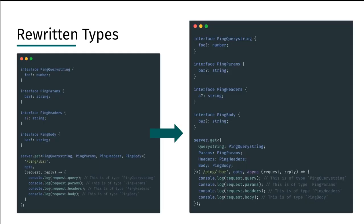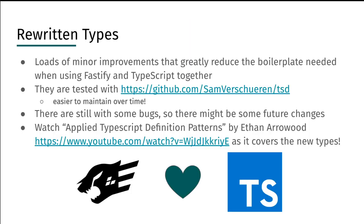We have also completely rewritten and overhauled the whole TypeScript interfaces, as well as all the types in the project. These were written to simplify usage and remove most of the boilerplate that is normally needed. It simplifies the development of Fastify applications with TypeScript quite a lot. These improvements are driven by principles depicted by Ethan in his talk, 'Applied TypeScript Definition Patterns' at OpenJS World. Note that the types have also been tested using a tool called TSD, which makes the types easier to maintain over time.